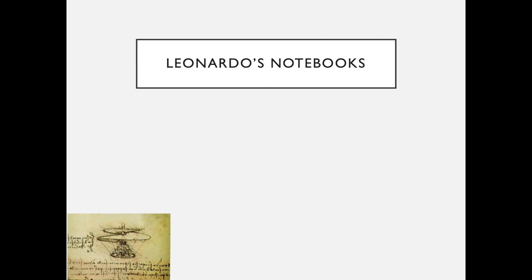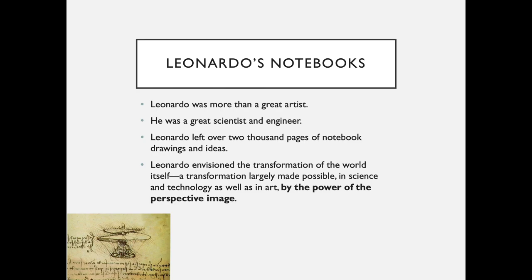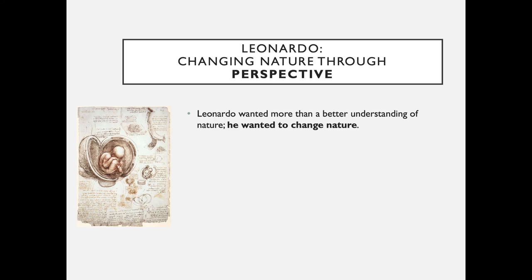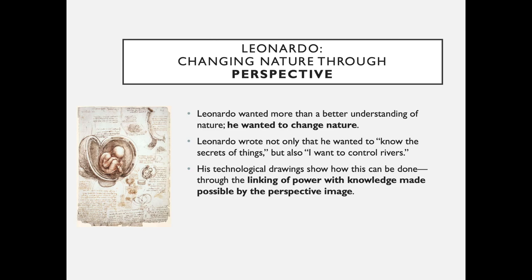Let's finish by looking at Leonardo's notebooks. Leonardo was more than a great artist — he was a great scientist and engineer. He left over 2,000 pages of notebook drawings and ideas. Leonardo envisioned the transformation of the world itself, a transformation largely made possible in science, technology, and art by the power of the perspective image. Leonardo wanted more than a better understanding of nature — he wanted to control or change nature. He wrote not only that he wanted to 'know the secrets of things,' but also 'I want to control rivers.' His technological drawings show how this can be done through the linking of power with knowledge made possible by the perspective image.